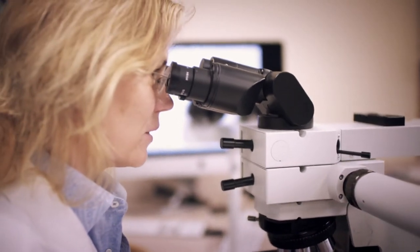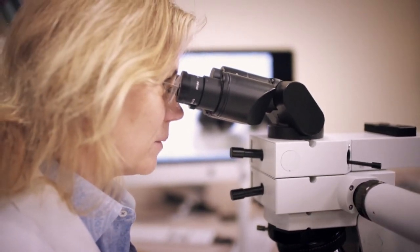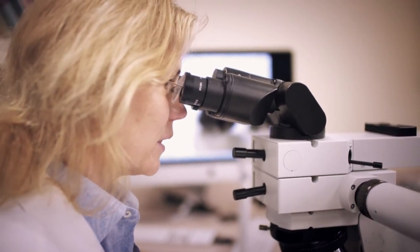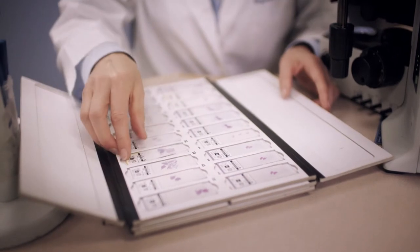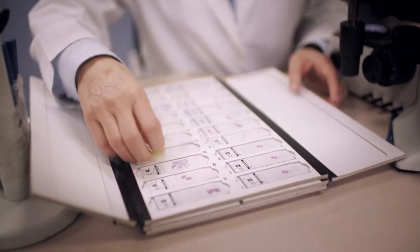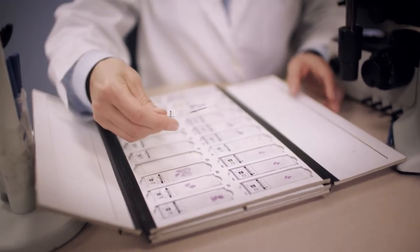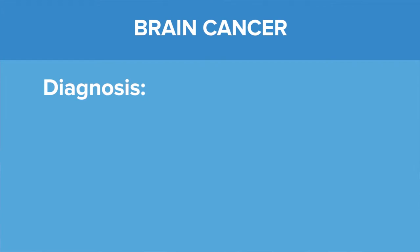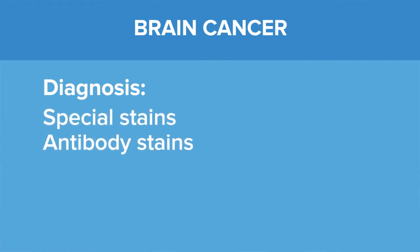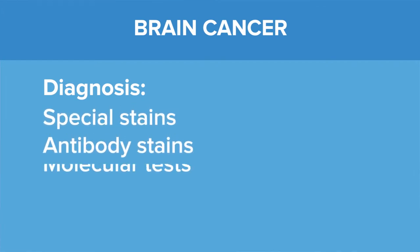When I'm looking at a slide under the microscope, I'm trying to determine whether this is a malignant tumor or a benign tumor. This is where experience comes into play, and we use stains, antibody stains, and molecular tests to determine what tumor type we're dealing with.